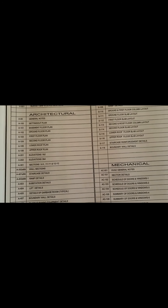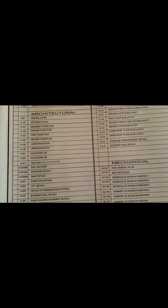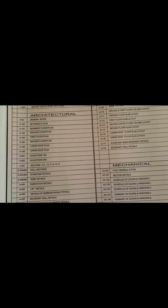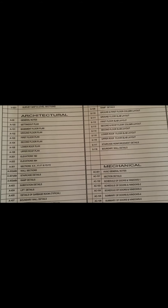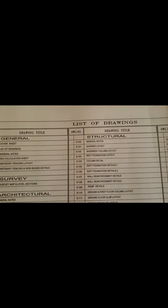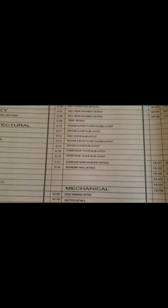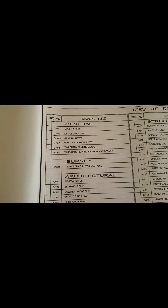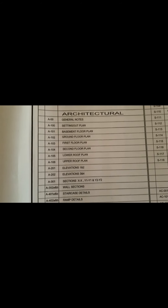Hi friends, today I will explain how to take quantities from drawings. Drawings means sometimes we will get hard copies or soft copies. When taking quantities from drawings, first we have to check all the drawings. In the first drawing sheet there will be a list of drawings — general, survey, architectural, structural, mechanical, plumbing, fire alarm, and all types of works.